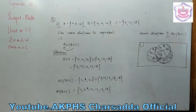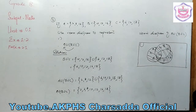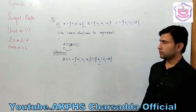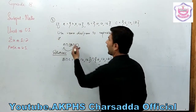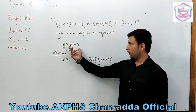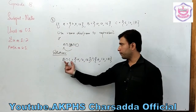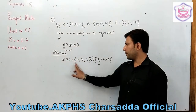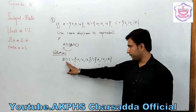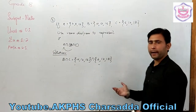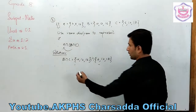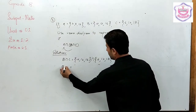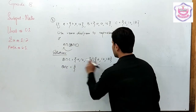Now for question number two: A intersection B intersection C. First we find B intersection C. Set B has elements {10, 12, 16} and set C has elements {6, 12, 18}. The common elements between B and C are found — 10 is not common, 12 is common, 16 is not common. So B intersection C = {12}.